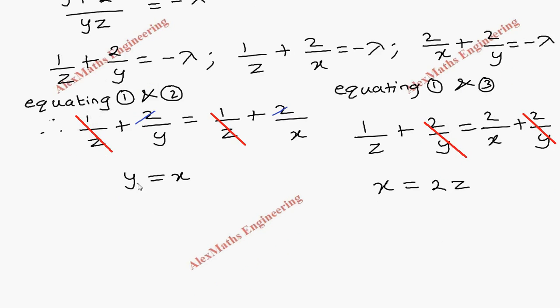Now we have x = y, this is one relation, and x = 2z. So this x = 2z I can directly write here.